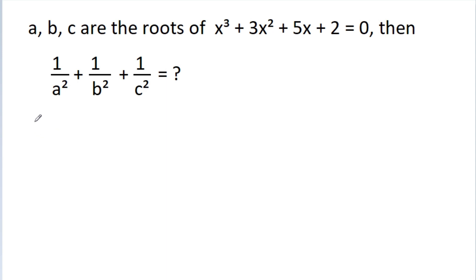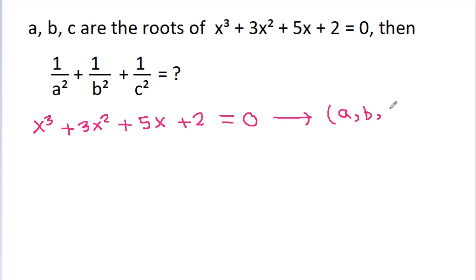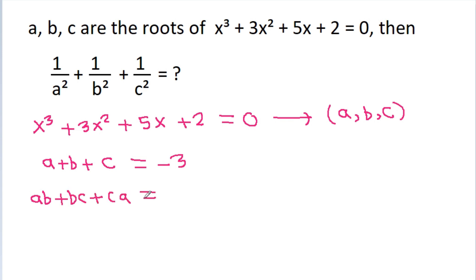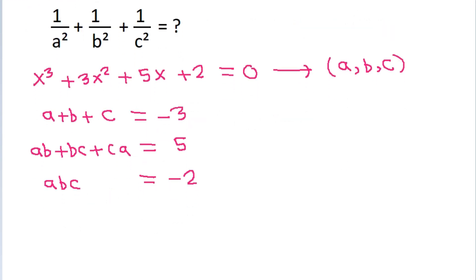The given equation is x³ + 3x² + 5x + 2 = 0 and the roots of this equation are a, b, and c. So sum of roots a + b + c = −3, sum of roots taken two at a time ab + bc + ca = 5, and product of roots abc = −2. We have to find the value of 1/a² + 1/b² + 1/c².